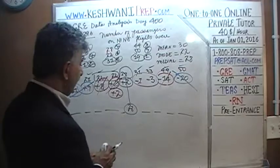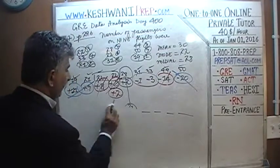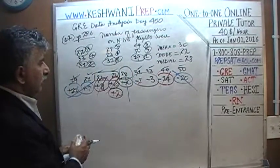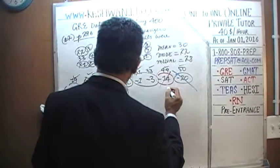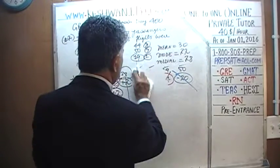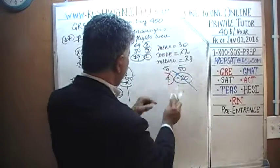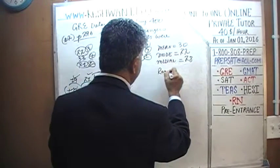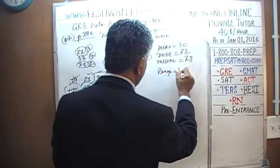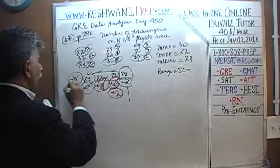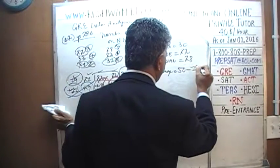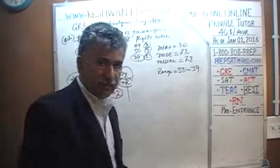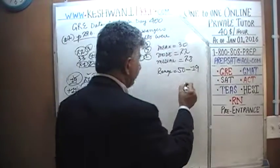The range is also very straightforward. The highest value was 50 and the lowest was 19. 50 minus 20 would have been 30, so 50 minus 19 is 31. The range is 31.